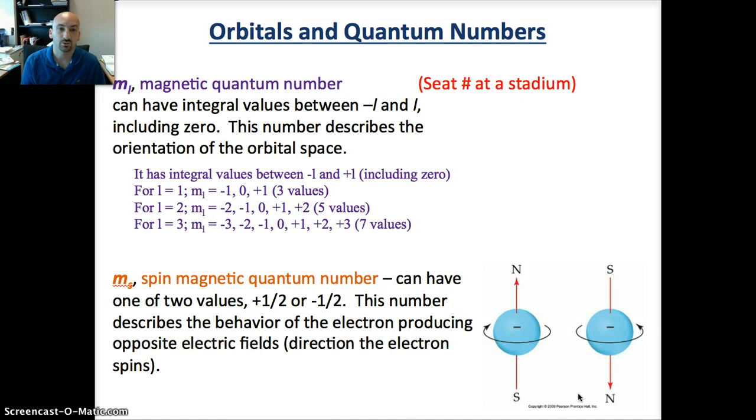Then we have M sub L, the magnetic quantum number, which tells you your exact seat number. So now it's really dialing in on where that electron's being placed. These can have integral values from minus L to L, and that includes 0. This number describes the orientation of the orbital in space. So if you have L equals 1, that means M sub L can be minus 1 to plus 1 with 0 included. L equals 2 means M sub L is equal to minus 2, minus 1, 0, plus 1, plus 2, etc.